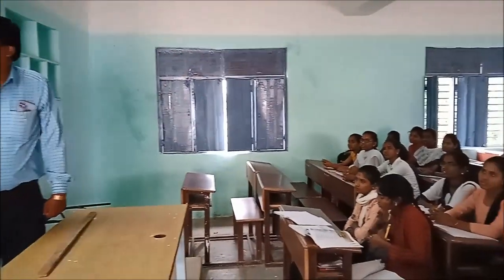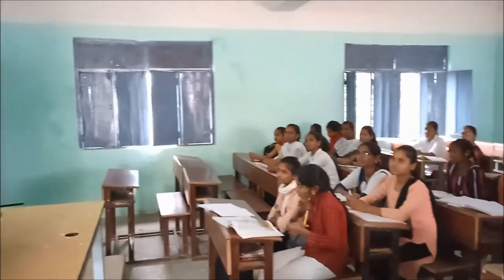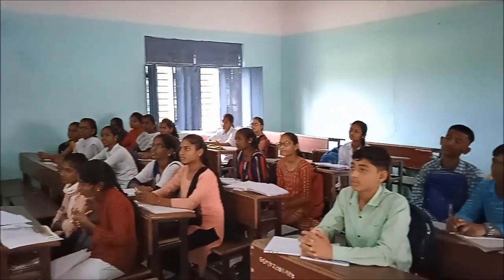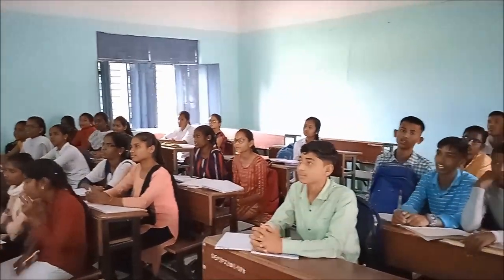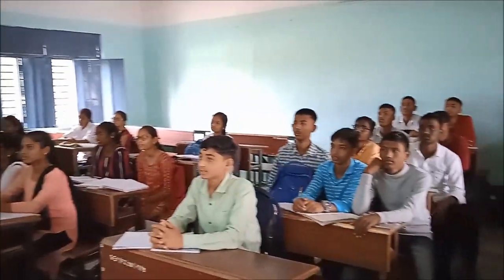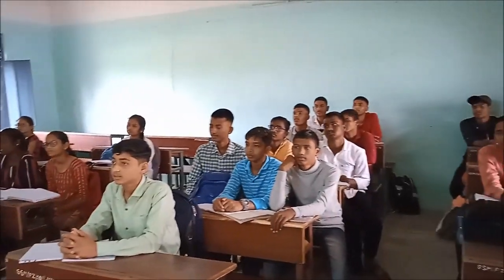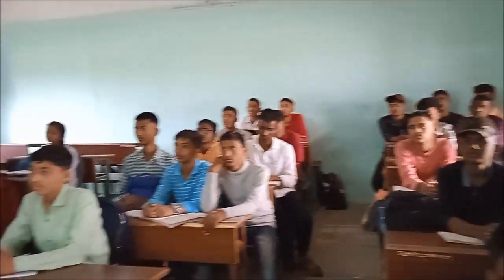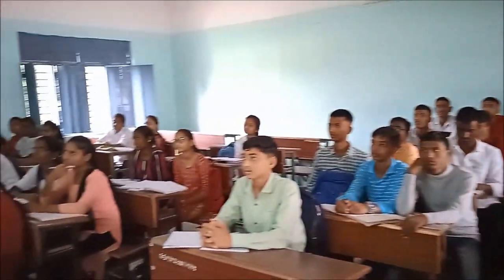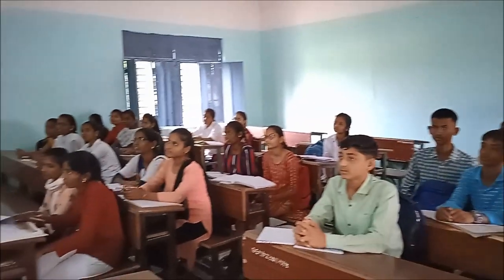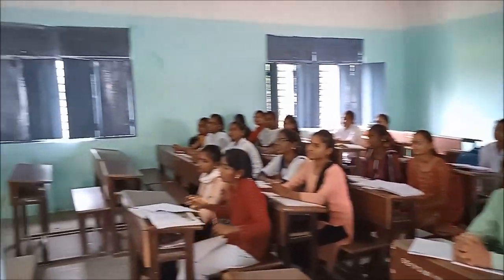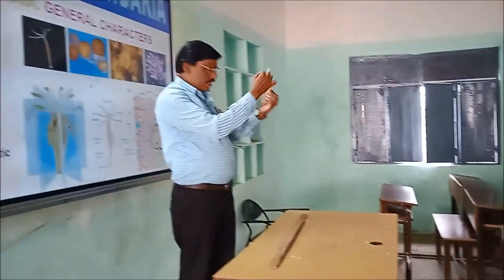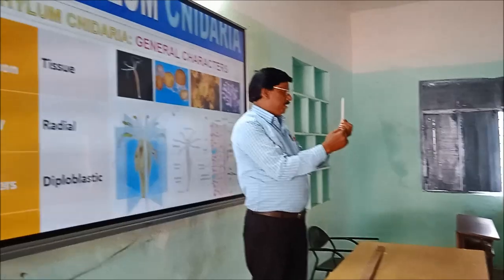This phylum has radial symmetry. It can be divided into two equal halves through any vertical plane passing through the central axis.